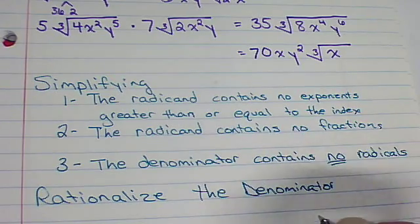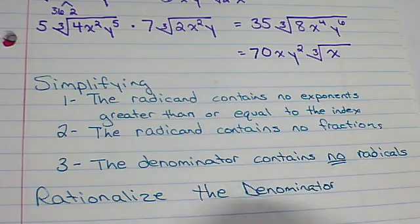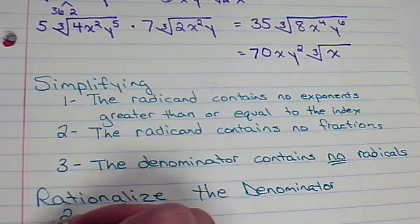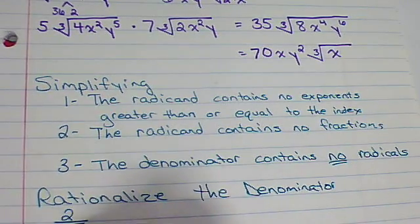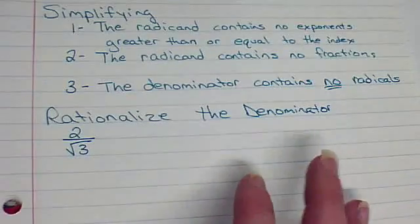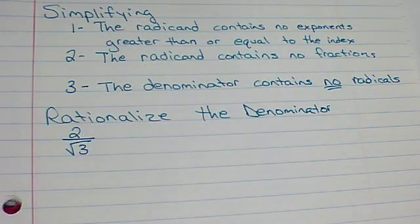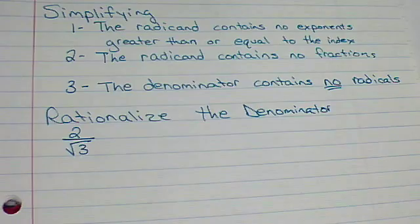So, let me give you a few examples here. What if I had 2 over the square root of 3? I have a radical in the denominator. That is a no-no. I don't want the radical in the denominator. So, I have to think about something. What could I multiply the square root of 3 by, so that it would not be, I can maybe get it out.